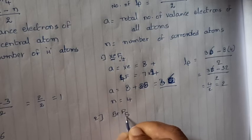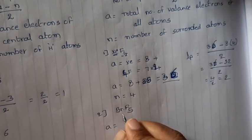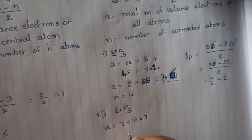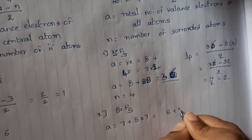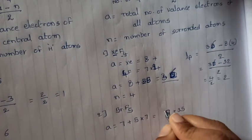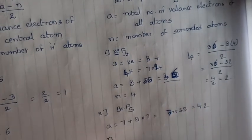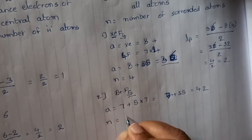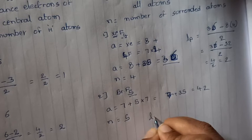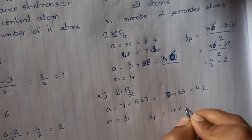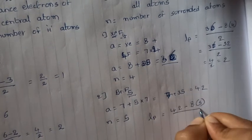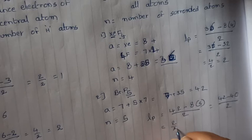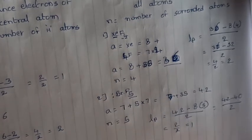For the second example, BrF₅: A equals the valence electrons of bromine plus five fluorines. Bromine contributes 7 valence electrons, and each fluorine contributes 7 electrons, so 5 times 7 equals 35. A equals 7 plus 35 equals 42. N equals 5, since bromine is surrounded by 5 fluorines. Lone pairs equals (42 minus 8 times 5) divided by 2 equals (42 minus 40) divided by 2 equals 1. Bromine has one lone pair.